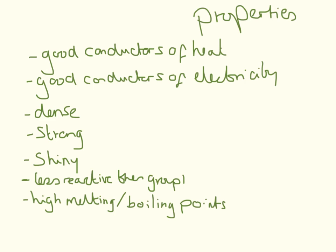These are some properties of transition metals that you need to know. These are basically the properties of the majority of metals, with some exclusions. They are good conductors of heat and electricity, they are dense and hard, they are strong and shiny. They are less reactive than group 1 metals — group 1 metals have to be stored under oil because they react with water in the air, but we don't need to do that with transition metals. And they have very high melting and boiling points.